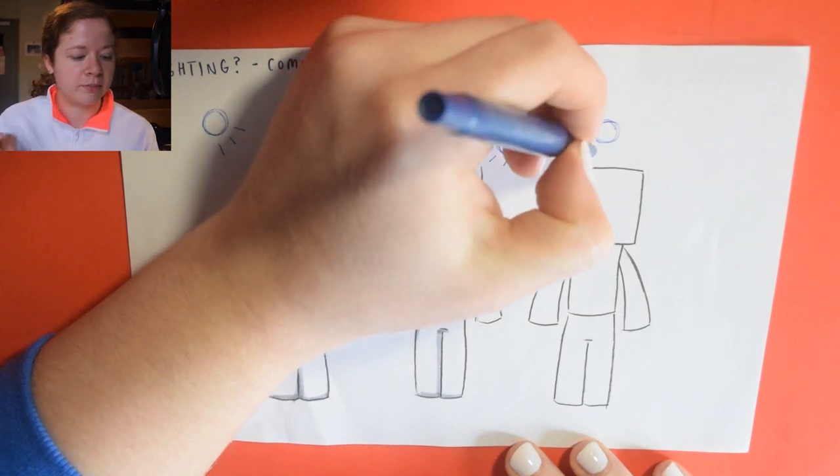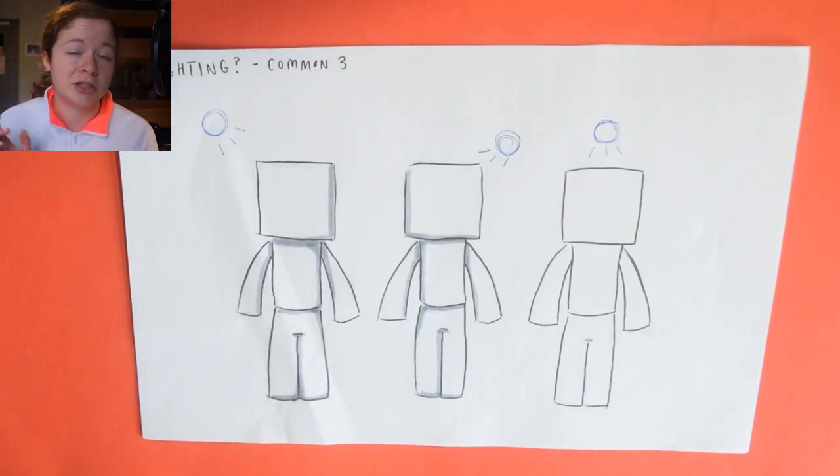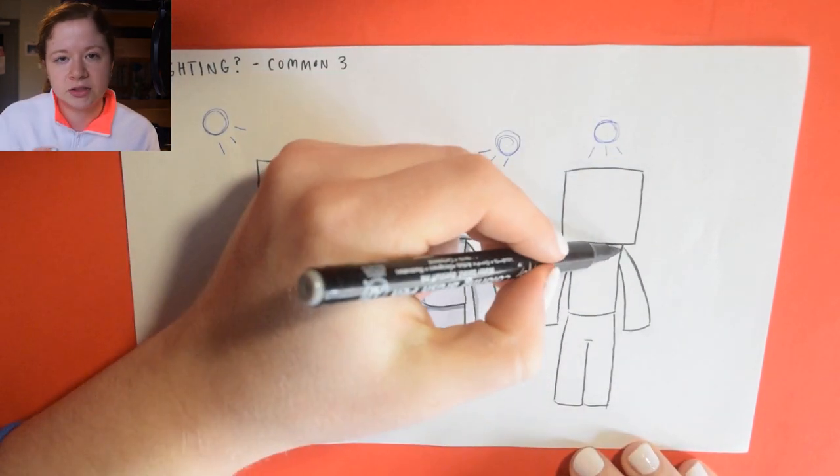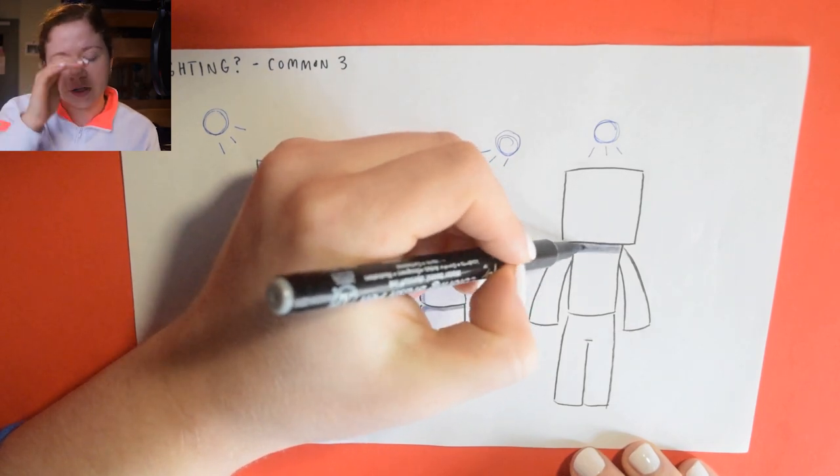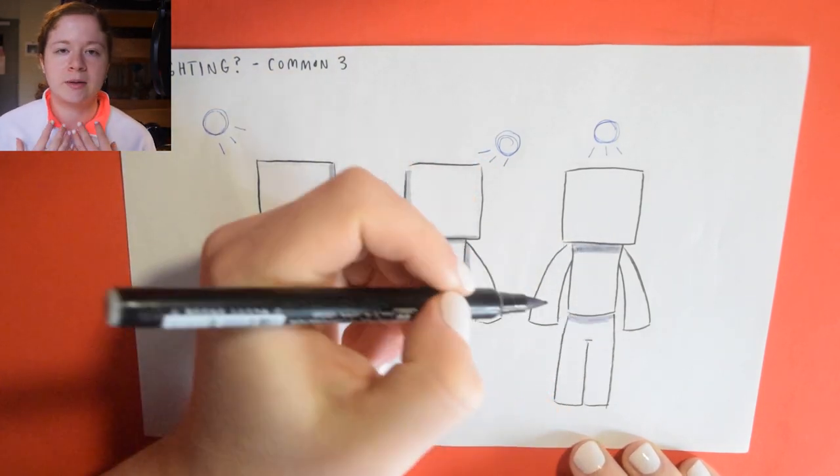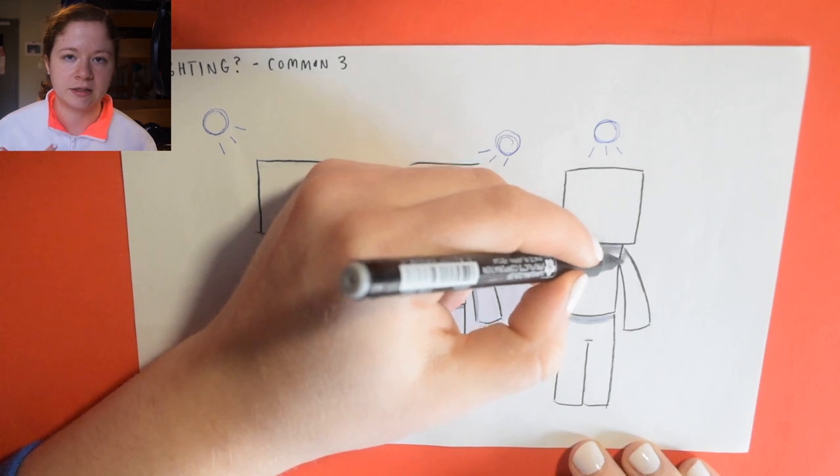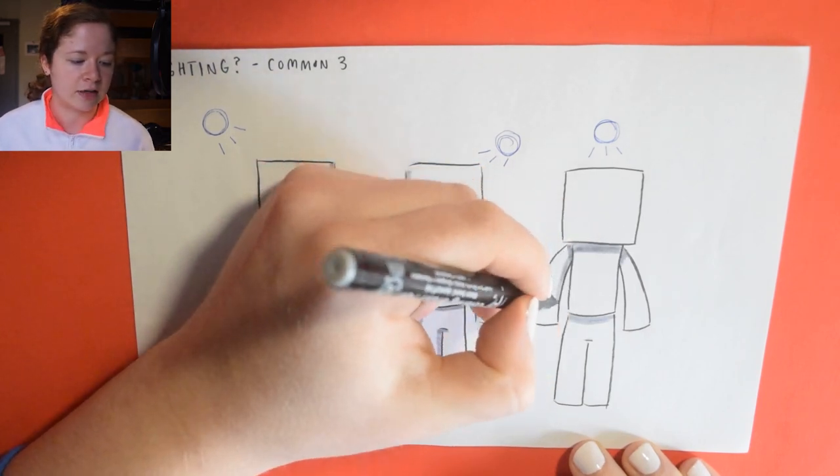And then my third example is from straight above. This is going to cause pretty much no shadows on the face. Unless there was hair, you might get a shadow under the hair, but it's going to create a bigger shadow right around the neck area and a lot on his inner arm.